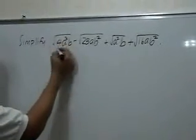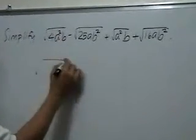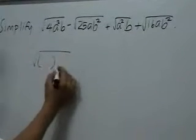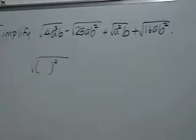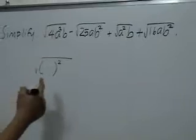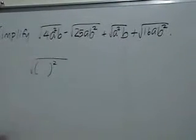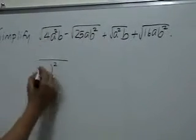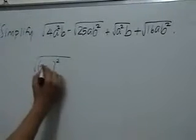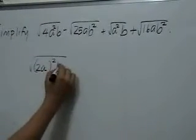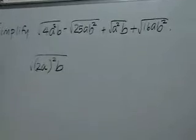For this first term, we will write this as the product of two terms, one of which is a perfect square so that we can use the law of radicals and take that factor out. So for four, we have two squared. This is a squared and we will be left with b as the second factor.